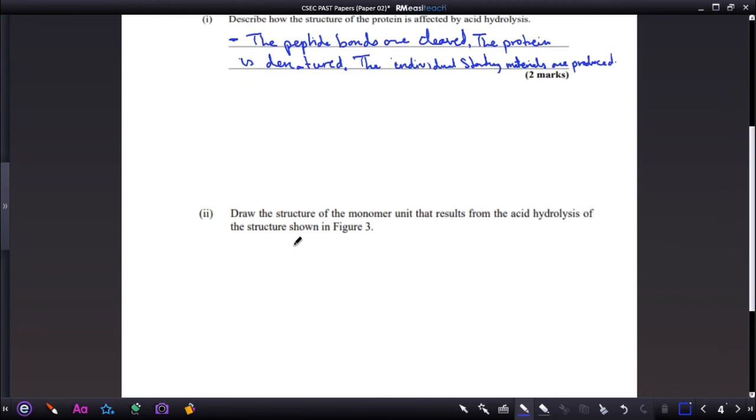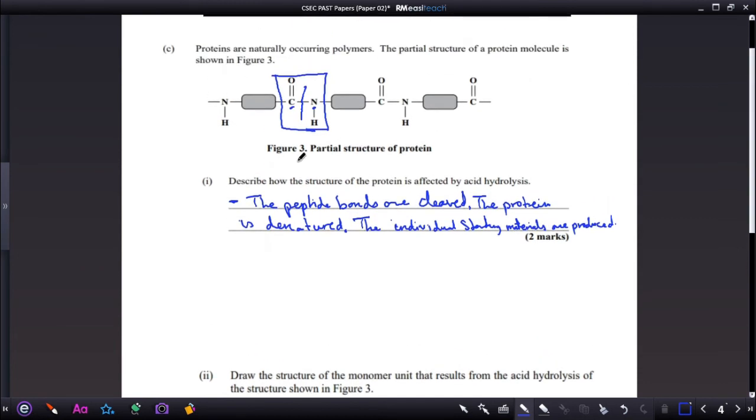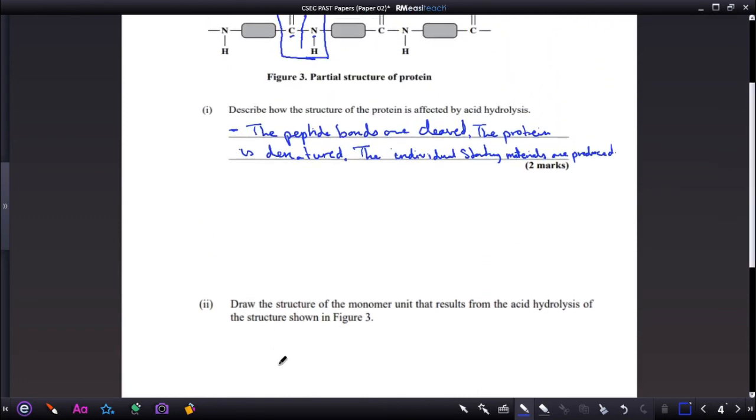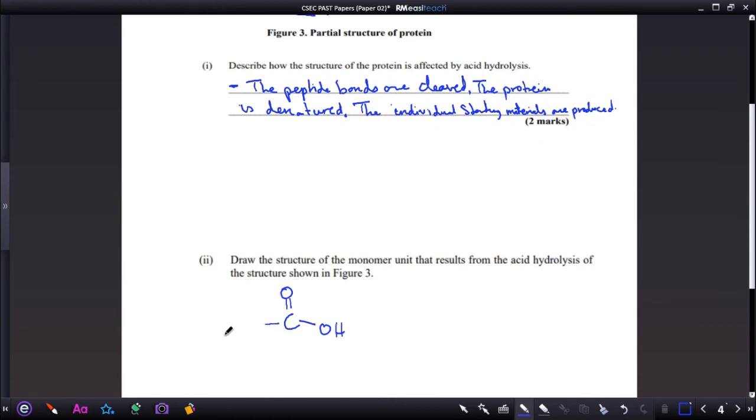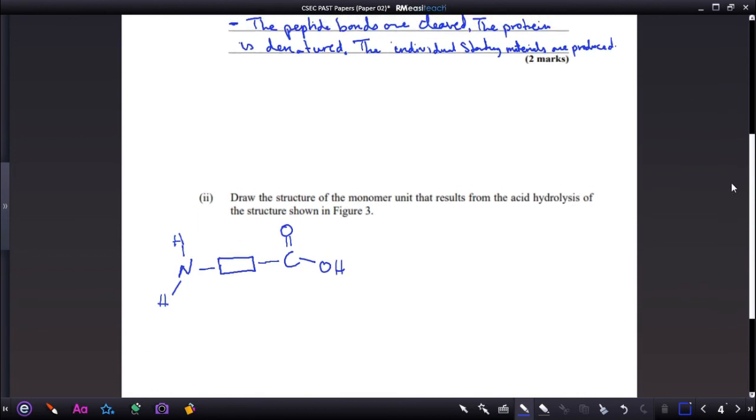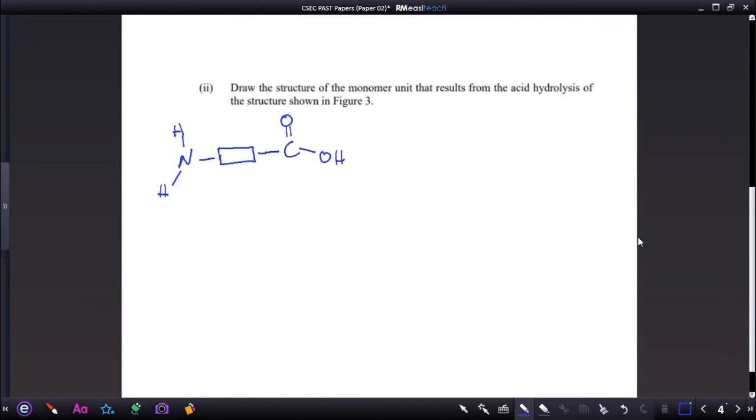Part two wants you to draw the structure of the monomer unit that results from the acid hydrolysis of the structure. Because they are all the same repeating units, you can just pick any one and draw that structure. We said that the peptide bonds were cleaved, and we ended up with the individual monomers. Here we have the rectangular box which represents the rest of the molecule bonded to an NH2 group. So this would represent the amino acid, the starting material for the protein structure that we have above after it has been hydrolyzed.